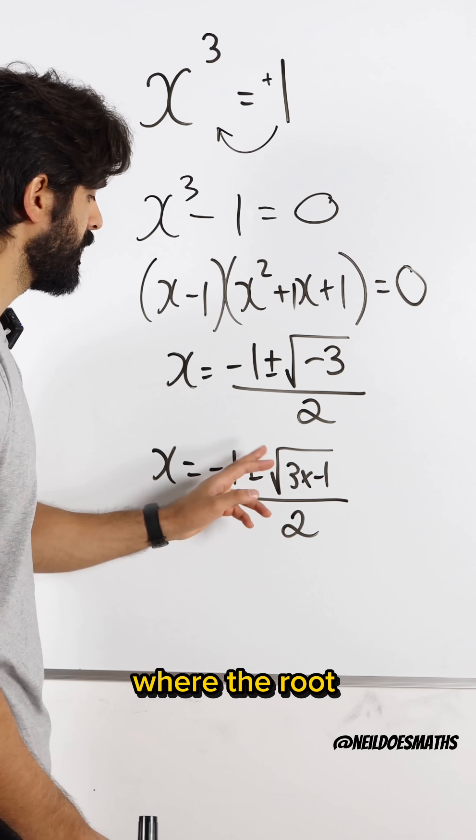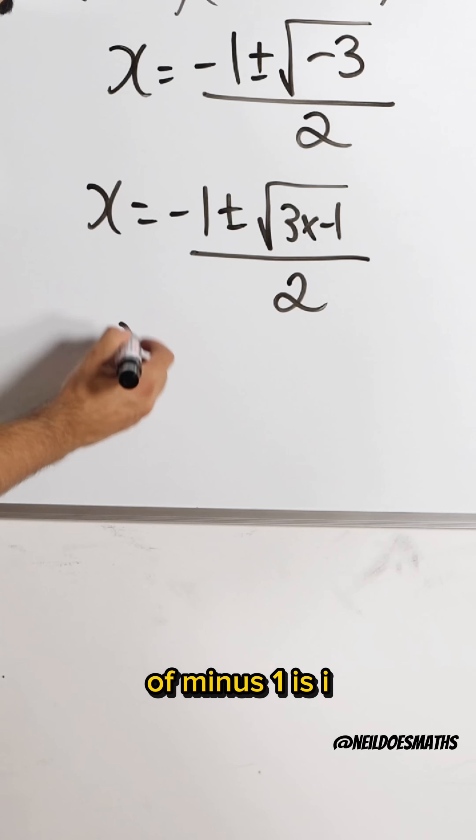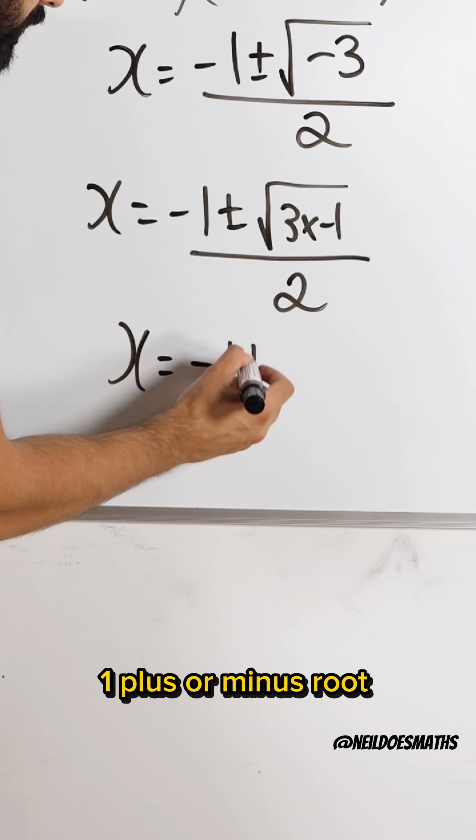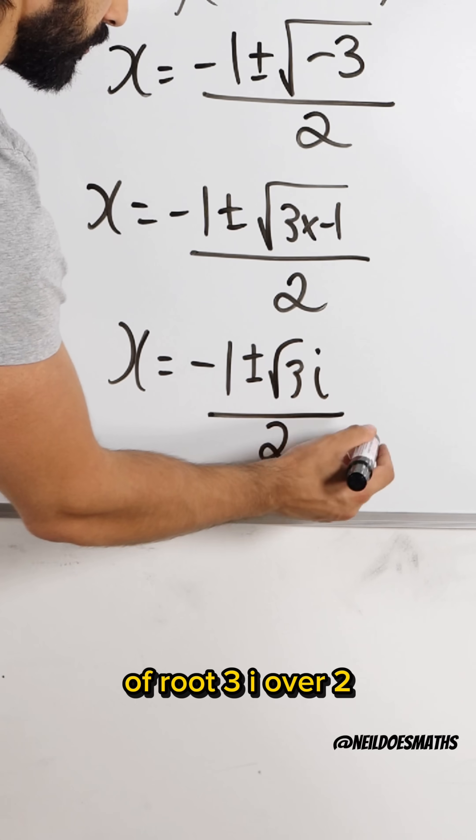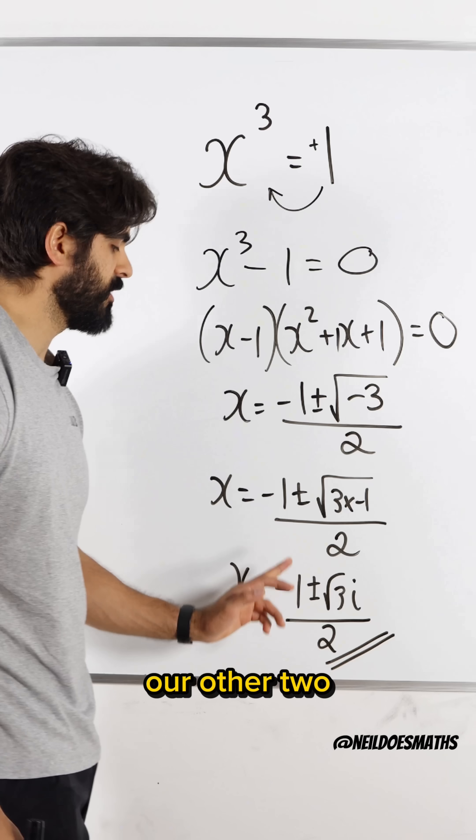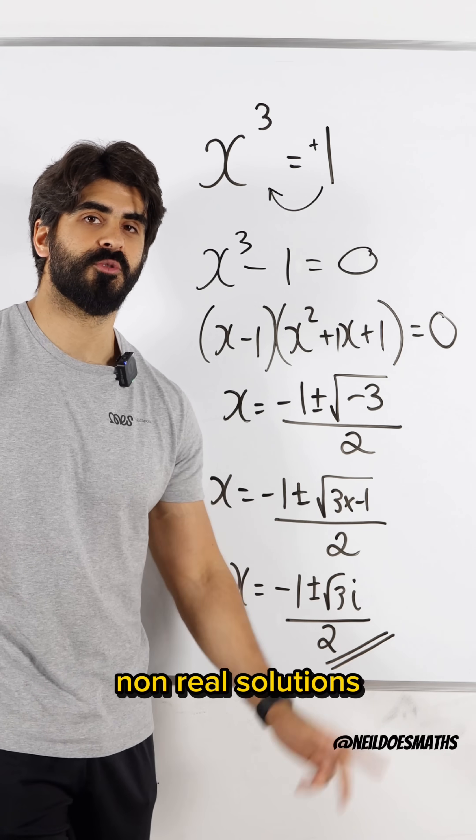And this is where we move into the complex plane where the root of minus 1 is i. So we get minus 1 plus or minus root of root 3, i over 2. And these are our other two non-real solutions. Nice.